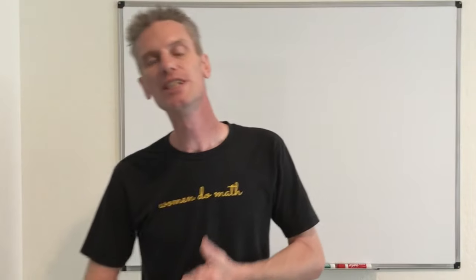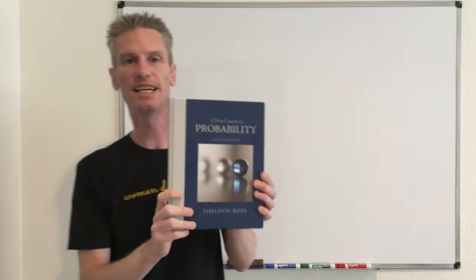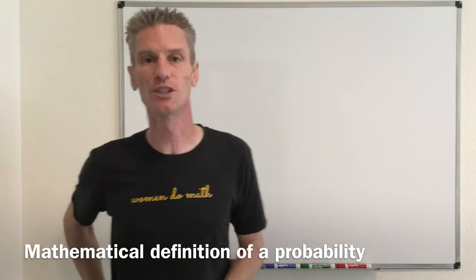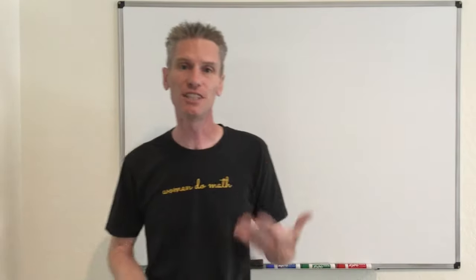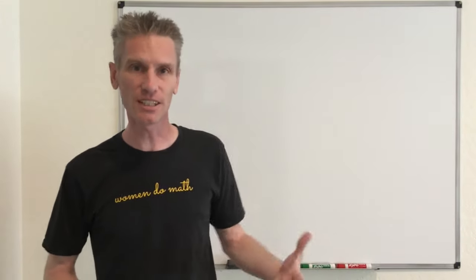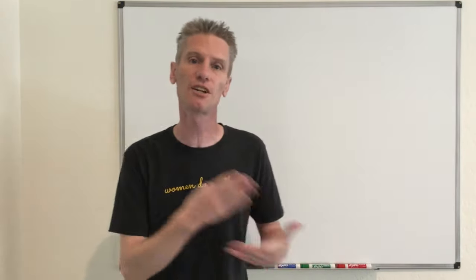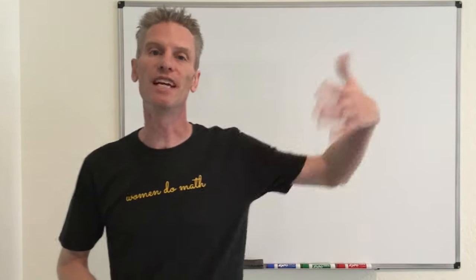Hi everyone, welcome back to my YouTube videos. In this video, I'm going to start with chapter 2 of the textbook. This chapter is about the axioms of probability, and in particular I'm going to give you the mathematical definition of what we call a probability. You might find the definition kind of strange, but I'm going to show you that it makes complete sense and is consistent with our intuition of what a probability should be. Then I'm going to derive a few important properties of probabilities.